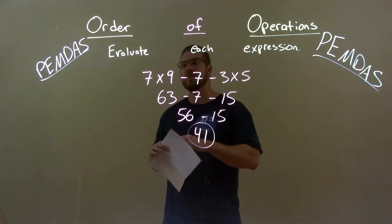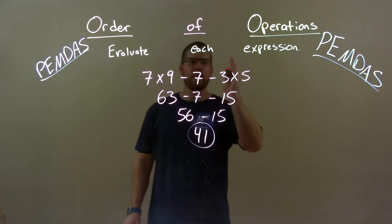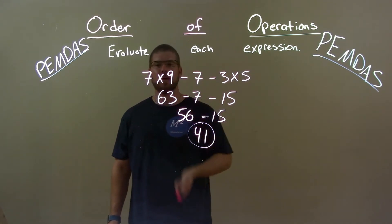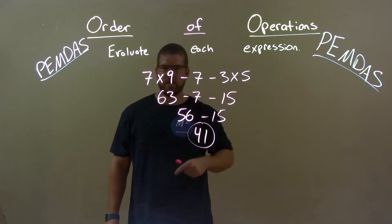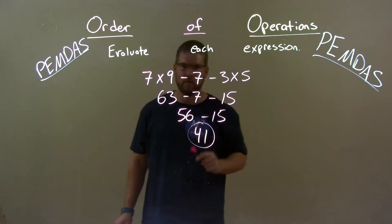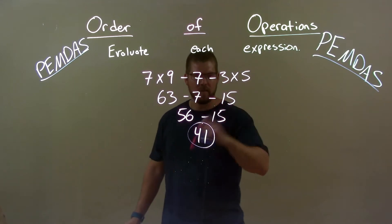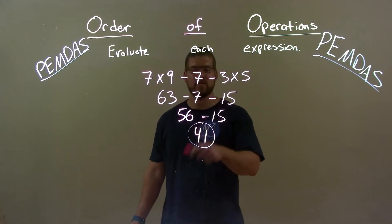Quick recap, we're given 7 times 9 minus 7 minus 3 times 5. Multiplication is first, highest order. We see it twice. 7 times 9 is 63, 3 times 5 is 15. Bring down the subtractions and a 7. Now all subtraction. Read left to right. So 63 minus 7 is 56. Bring down the minus 15. Then 56 minus 15 is 41. So again, final answer is just 41.